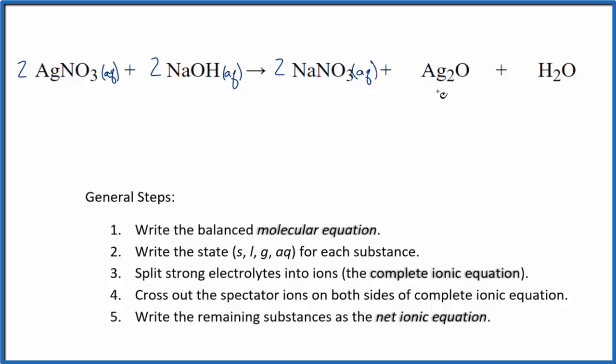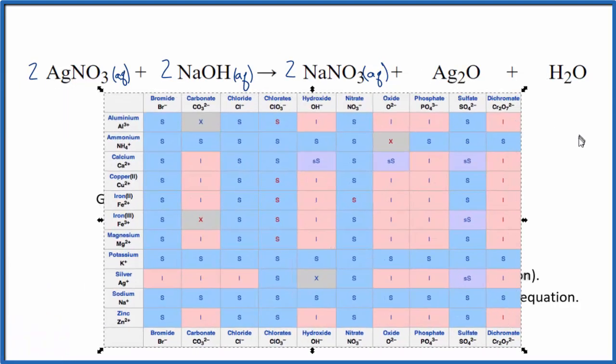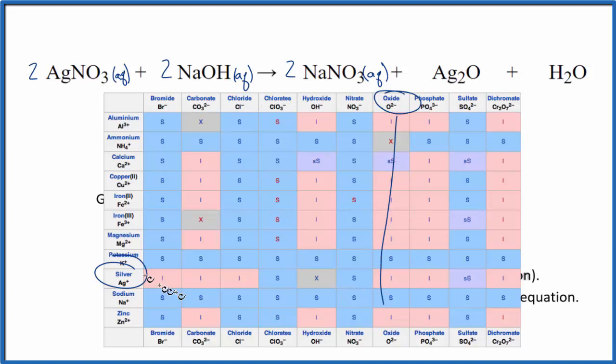This silver nitrate, though, we should probably look that up on a solubility table. So on our solubility table, we can find silver right here, and then this oxide here. And we can go down, and if I go across, right here it is. This I, that means it's insoluble. It's not going to dissolve in water.